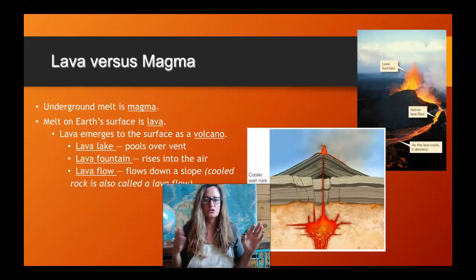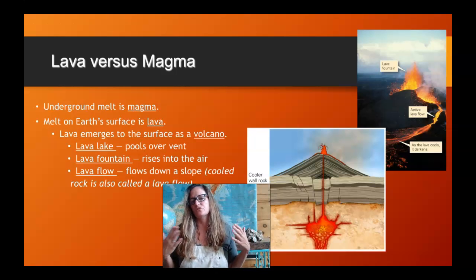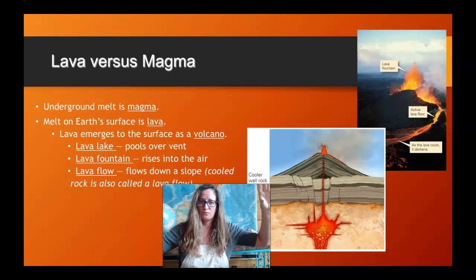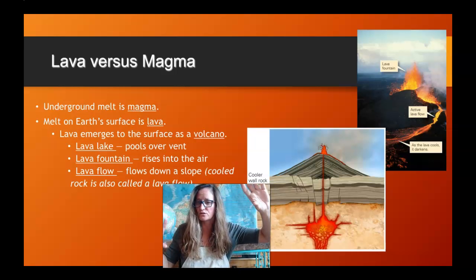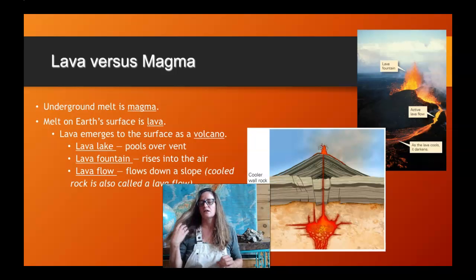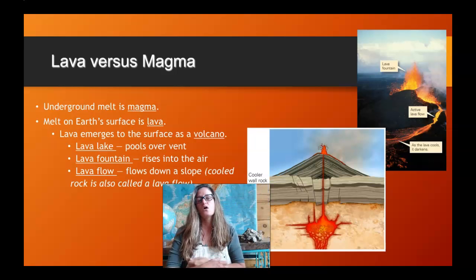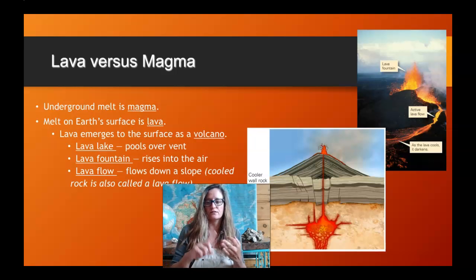We throw around the terms lava and magma, but they mean different things. Lava is a kind of magma. Magma is molten rock. If that magma gets to the earth's surface, it's called lava. Once it's at the surface, it could be three different things: a lava lake just sitting there at the surface, a lava fountain shooting up lava, or a lava flow moving like a river of liquid rock — the flow, the fountain, or the lake.